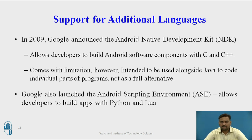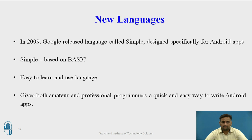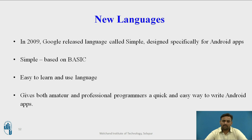There are various languages in which you can write Android applications. First of all, C and C++ were introduced by Android developers, but due to some circumstances they were removed, and then Google launched the Android Scripting Environment (ASE), which allows you to write code in Java and Python as well. In 2009, Google also released one specific language called Simple, which is very relevant to Android development. It is based on BASIC and is very easy to learn and use, making it comfortable for both amateur and professional programmers to write Android applications.